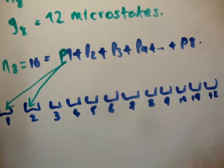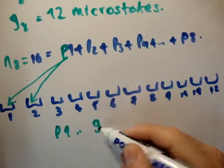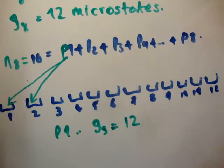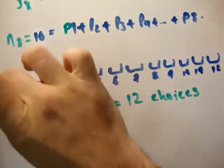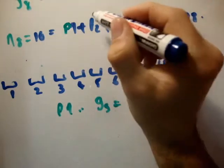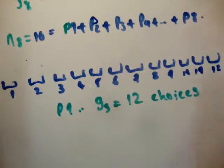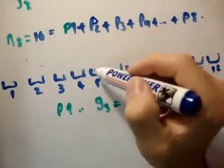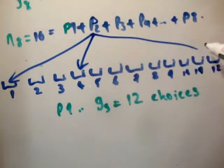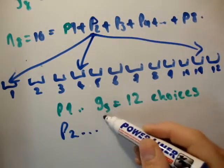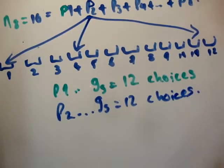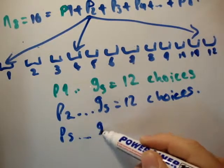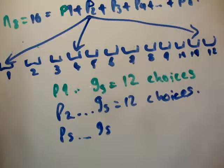Well particle 1, it could go in here or it could go in here or it could go into any one of these. No problem. So particle 1 has g sub s equals 12 choices of where to go. Well then look at particle 2. Particle 2 comes along and says well it doesn't matter what particle 1 did because we are not interacting. So he also can go wherever he likes. So particle 2 also has g sub s equals 12 choices. And you should be able to see that in general, particle s has g sub s choices.